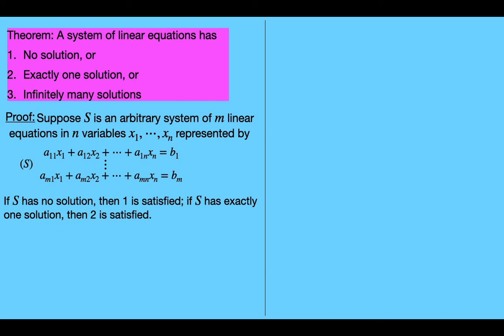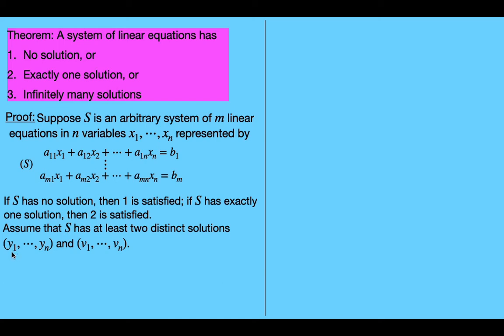So we're going to assume that s has at least two distinct solutions — the first solution and the second solution. We're going to show that since s has at least two distinct solutions, it must have infinitely many solutions.